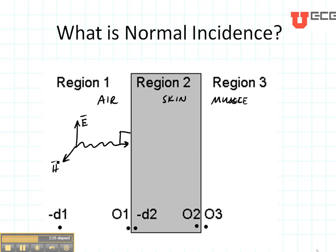And both of these, the electric and magnetic field, are polarized parallel to the boundary but the direction of propagation is perpendicular or normal to the boundary. So normal incidence is defined by the direction of propagation of this plane wave.